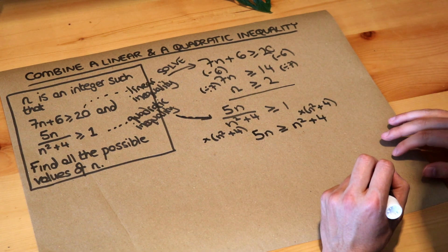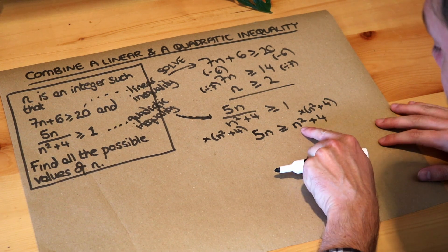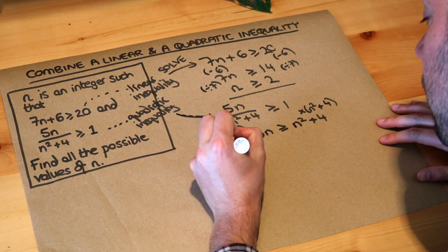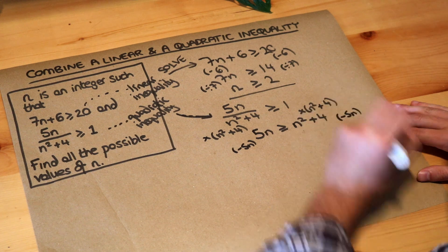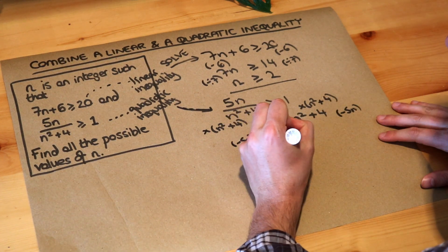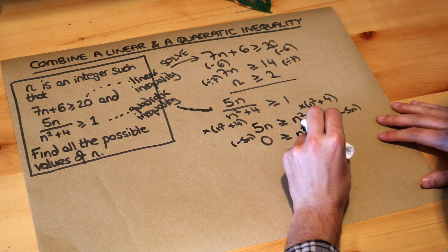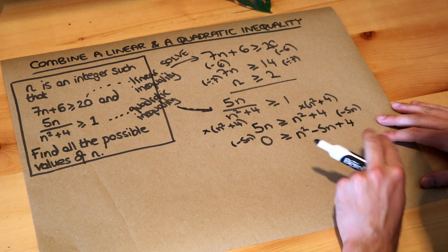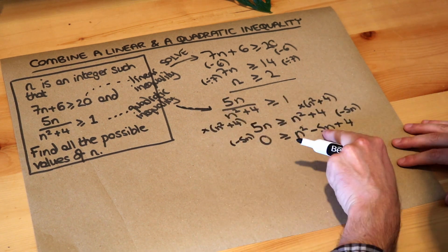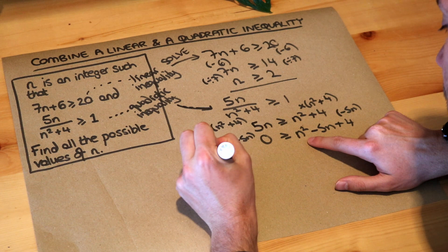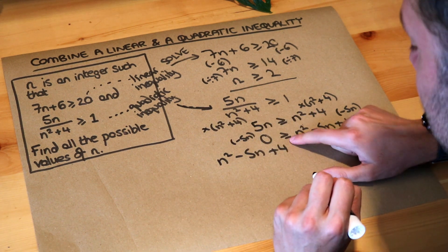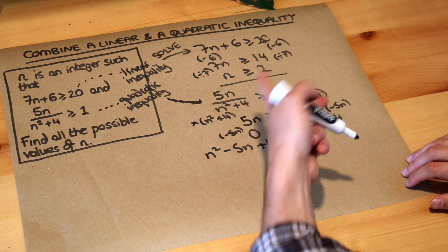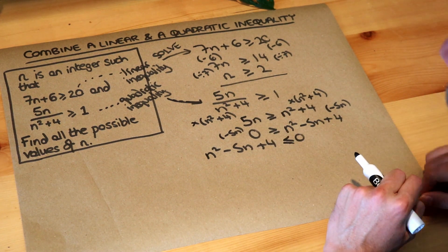And then the next step is to get 0 on one side of the inequality. We want to leave the n squared where it is because it's already positive. If we move the n squared to the left, it would become negative, which makes it harder. So I'm just going to subtract 5n from both sides. That then becomes 0 is greater or equal to, and then we're going to subtract 5n from this. So n squared, we want the n squared term first, then the n term, then the constant term. Let's just write it the other way around, because we like the n squared to be on the left. So we've got n²-5n+4 is less than or equal to 0.